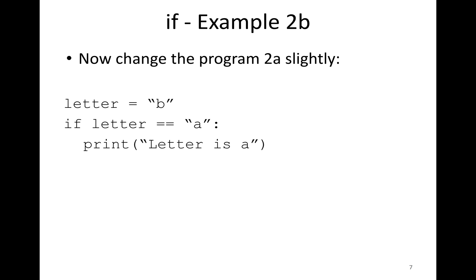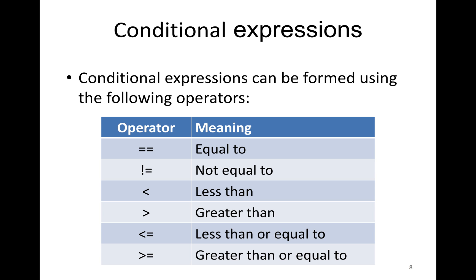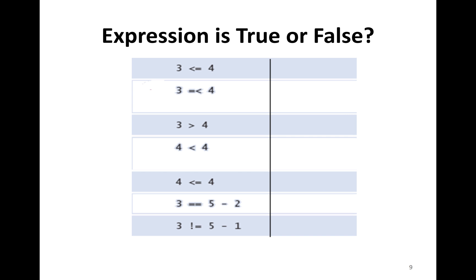Conditional expressions can be formed using the following operators: == (equal to), != (not equal to), < (less than), > (greater than), <= (less than or equal to), and >= (greater than or equal to). Each expression evaluates to true or false. You can try these out on your own.